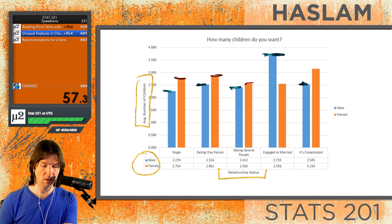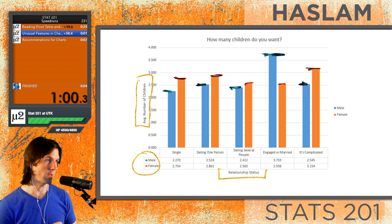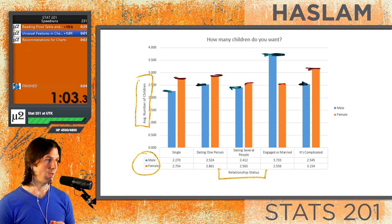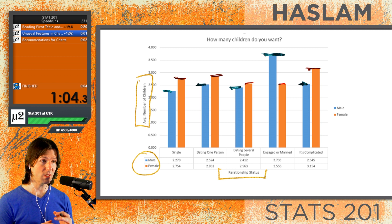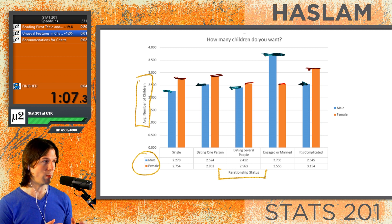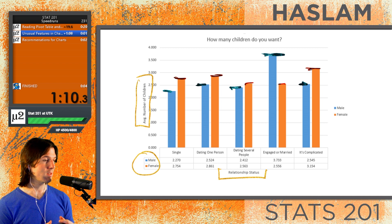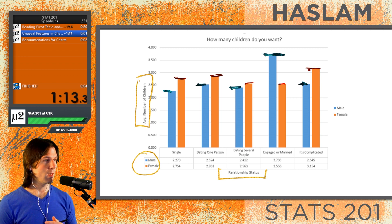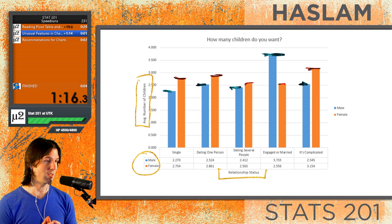The 'it's complicated' group shows a slightly higher average than all the other groups. Both groups are pretty consistent overall — males are maybe more consistent — and then there's this big jump for males when engaged or married. The females are pretty consistent too, but then there's a big jump for the 'it's complicated' group. Noticing jumps in the data is a way to look for unusual features.